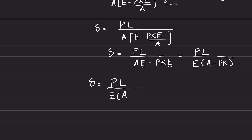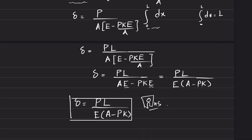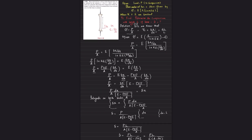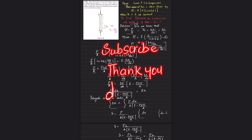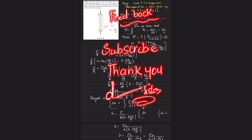So the total change in length due to load P is delta equals PL divided by E times (A minus Pk), and that is the answer. I hope you enjoyed this video and learned from it. If you are new to my channel, please subscribe and press the bell icon for notifications. Any questions can be asked in the comment section, and please provide feedback. Thank you.